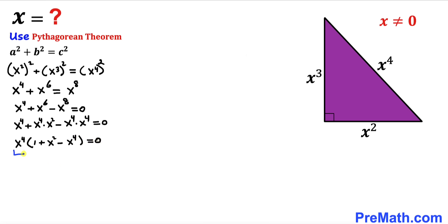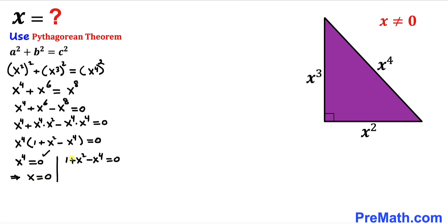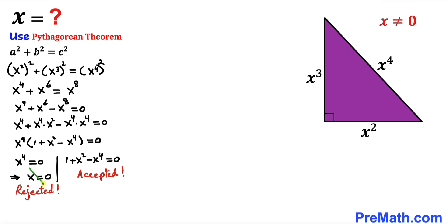Now let's separate these two factors. Either x⁴ = 0, or the other factor: 1 + x² − x⁴ = 0. In the first case, x⁴ = 0 means x = 0. But we established that x cannot equal 0, so we reject this scenario and accept the second one.